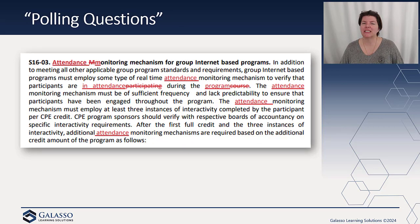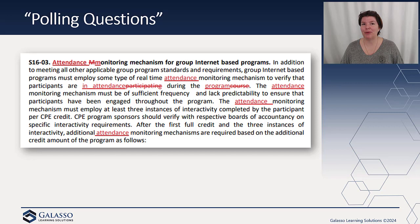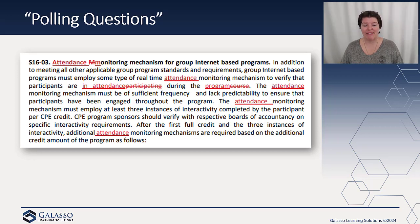So let's talk about polling questions, because we get a lot of 'why are there so many polling questions?' We have to do attendance monitoring, and when we talk about attendance monitoring, it must be of sufficient frequency and lack of predictability — so it can't be every 12 minutes, for example. It has to have at least three instances of interactivity per CPE credit. We offer four per hour simply because if you miss one, you still get credit because you've answered three.